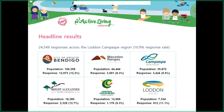Just under 25,000 responses across Lodden Campaspe, which is 11% of the population. It's low for what you might call a census, but it's very high in terms of a council-run survey — still a phenomenal number of responses, and participation among a really broad cross-section of the community, which is incredibly valuable.